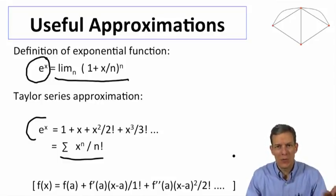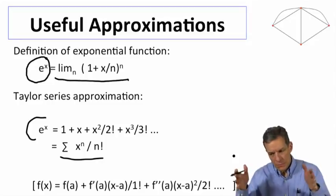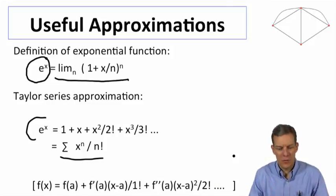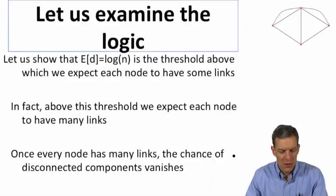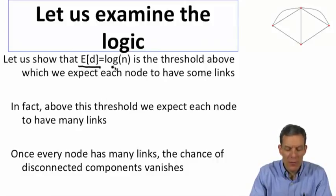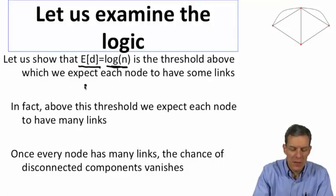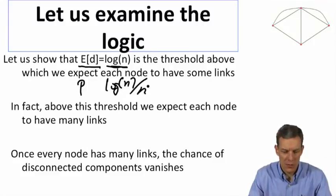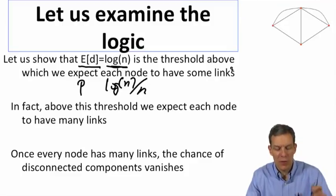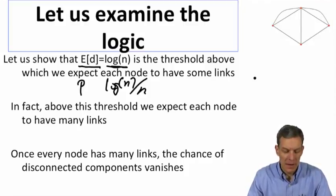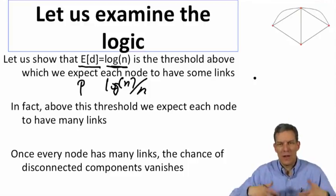These approximations will be useful here. We're going to approximate probabilities of events happening, and using these approximations we'll be able to get things back in terms of exponentials and then log functions. What we're going to show is that right at the point where your expected number of connections looks like log(N) — which is the point where P is proportional to log(N)/N — this is the threshold above which we expect each node to have some links and below which we expect nodes to be isolated.